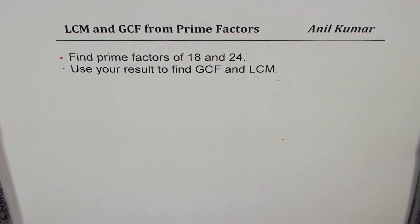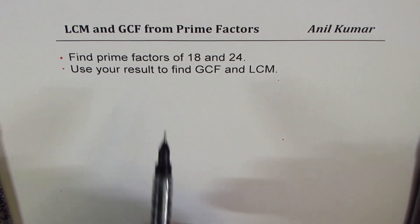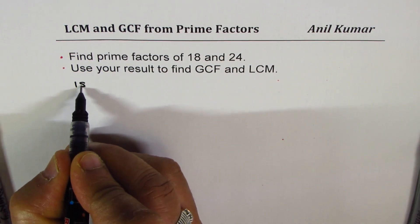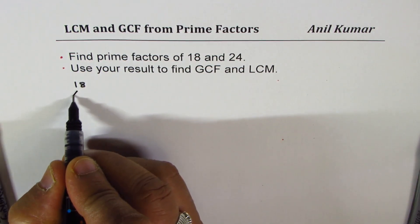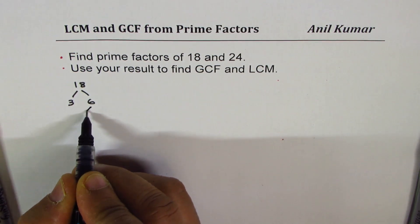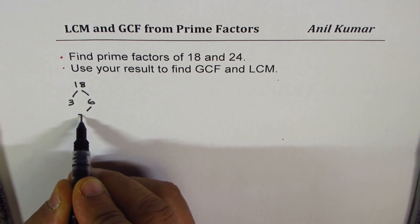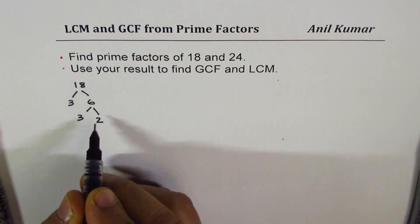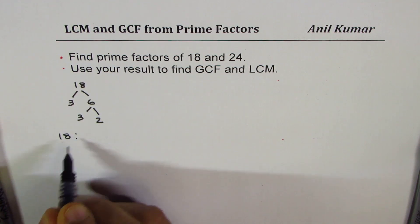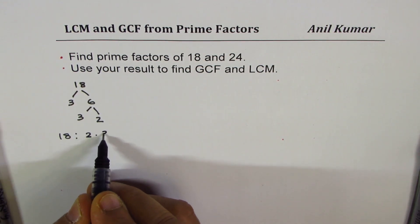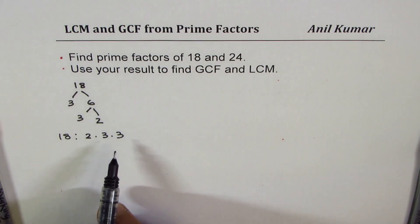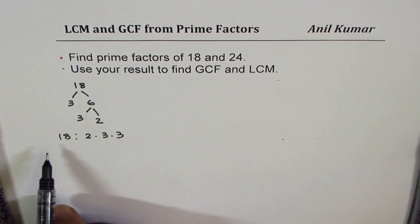So let us learn this technique. The first step is to find prime factors of these numbers. For 18, let's do prime factorization. 18 could be written as 3 times 6 and 6 can be written as 3 times 2. So we get prime factorization of 18 as 2 times 3 times 3, as product of prime numbers. That is what we call prime factors.